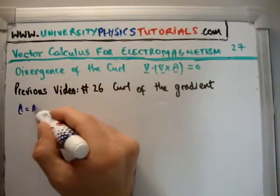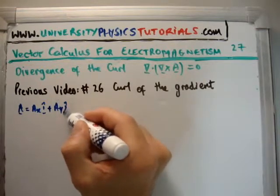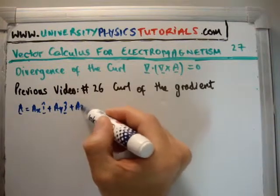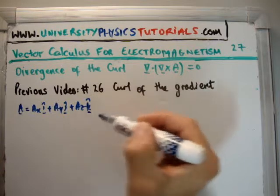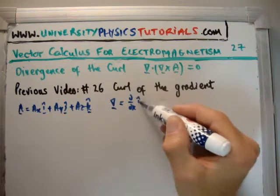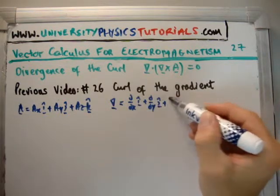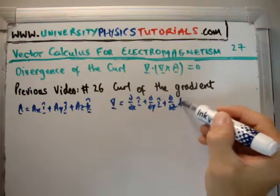So let's say we have the vector A, which is going to be A sub x in the i-hat direction, A sub y in the j-hat direction, and A sub z in the k-hat direction. We know, of course, that the nabla operator is a vector operator with del del x in the i-hat direction, plus del del y in the j-hat direction, and finally del del z in the k-hat direction.